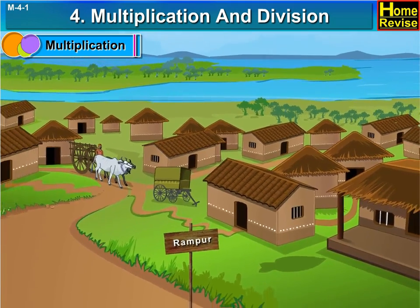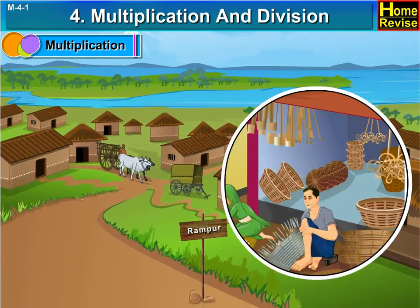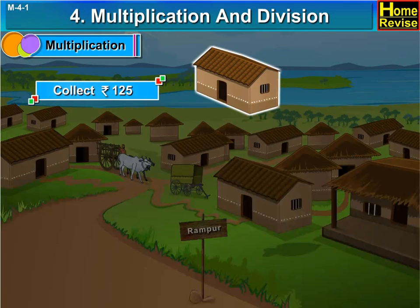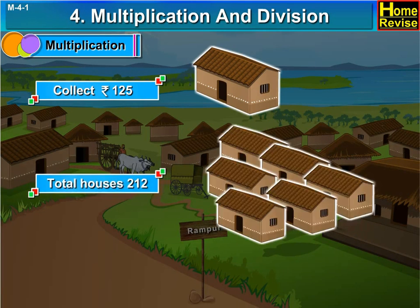All the villagers decided to start one small scale handicraft business. For starting the business, they wanted to collect the fund. So, they decided to collect Rs. 125 from each house of the village and in total there were 212 houses.